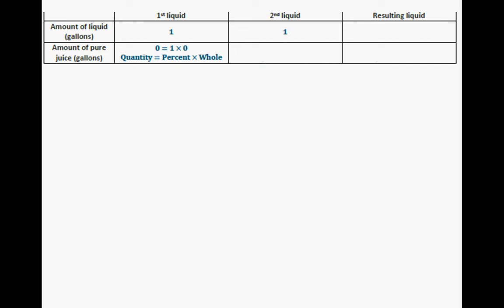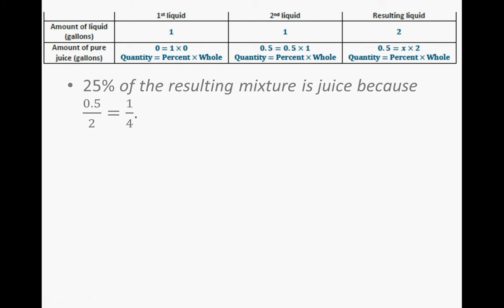The second liquid is also one gallon. However, the juice quantity is 50%, so 50% of one gallon gives us a quantity of 5 tenths — that portion of the liquid is pure juice. Now if we add those together, one gallon plus one gallon is two gallons. The pure juice is 5 tenths from the second liquid, but now we have two gallons of liquid. So 5 tenths divided by 2 gives us 25%. The resulting mixture of juice is 25%, because 5 tenths divided by 2 is the same as 1 fourth.